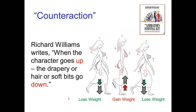Richard Williams in the Animator's Survival Kit describes this — he calls it counter-action. He writes: when the character goes up, the drapery or hair or soft bits go down. In this illustration from his book, the character is coming down and speeding up — going with gravity and losing weight. In the next pose, she's moving upward and speeding up, so it's as if she gains weight — her hair, clothing, and body itself seem heavier.